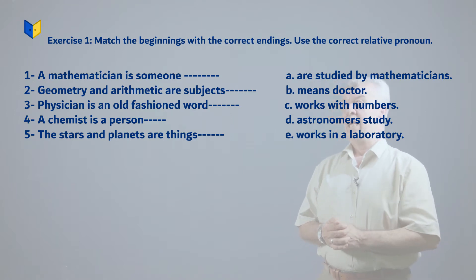Number one: A mathematician is someone. Number two: Geometry and arithmetic are subjects. Number three: Physician is an old fashioned word. Number four: A chemist is a person. Number five: The stars and the planets are things.